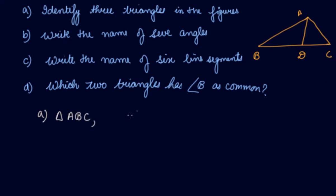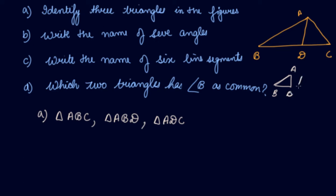Then the half triangle: triangle ABD, and then the other half triangle, A, D, C — triangle ADC. The figure is made up of joining two triangles: ABD and DCA (that is ADC). When you join them, you get AD as a common line, and you get this figure. So there are one full triangle and these two half triangles — three triangles in this.